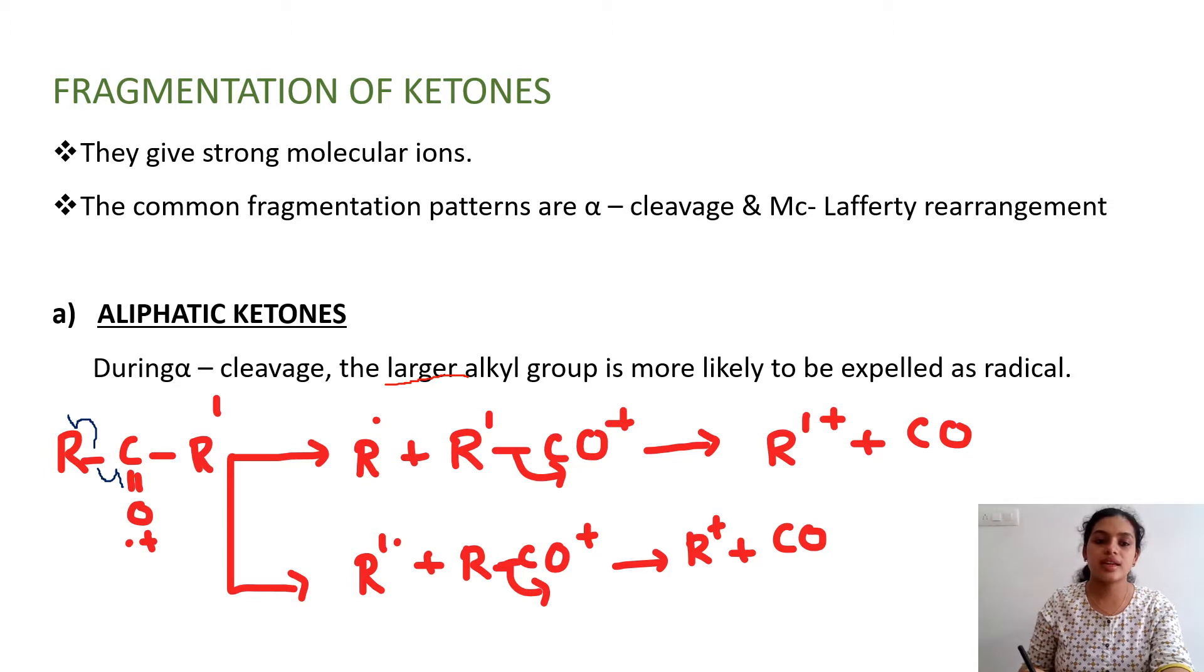The second cleavage could be from this R side to give you R dot and RCO+ fragment, and that could again fragment to R+ and carbon monoxide. This is the alpha cleavage.